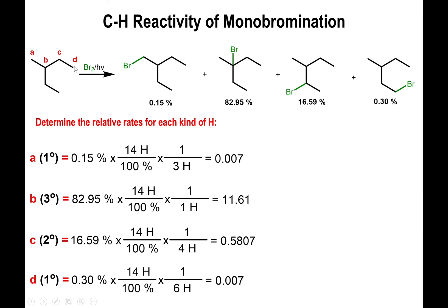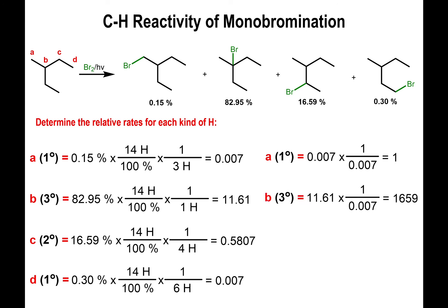Type D has a yield of 0.30% with six hydrogens total: 0.3 ÷ 100 × 14 ÷ 6 = 0.007. Dividing everything by 0.007 to get relative rates: types A and D are obviously 1. But type B (tertiary) is almost 1,660 — meaning a tertiary CH is almost 2,000 times more reactive than a primary CH when using bromine. And a secondary CH is 83 times more reactive than a primary hydrogen.